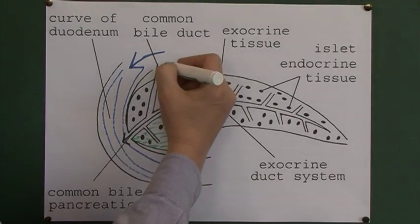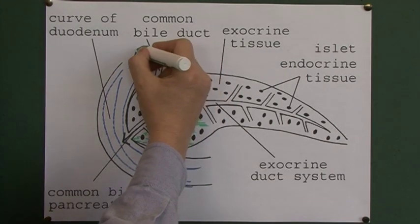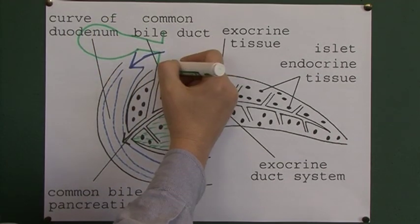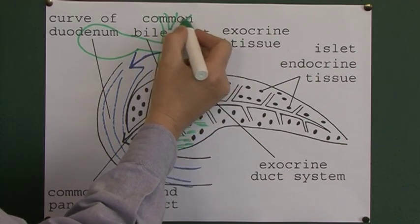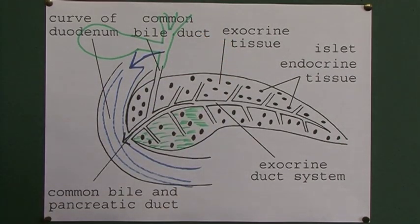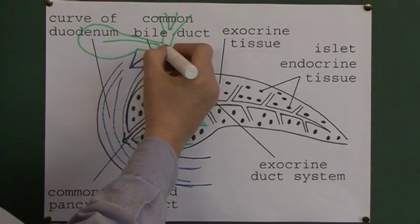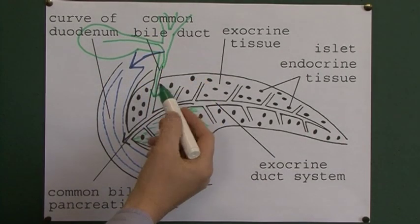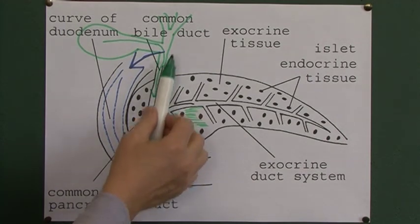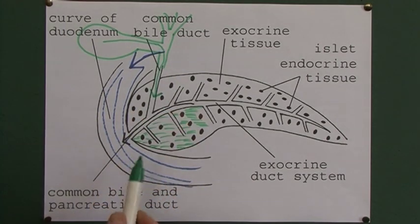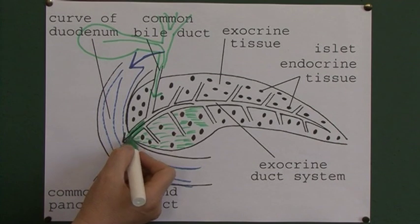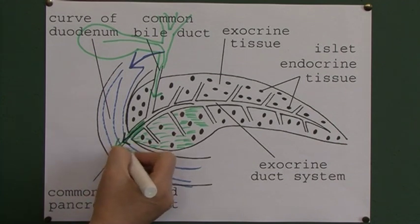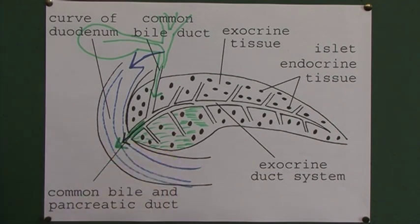Here we see the common bile duct. Up here you've got the gallbladder coming from the common hepatic duct and the right and left hepatic ducts. The bile is going to come down here, down the common bile duct, which goes through the tissue of the pancreas and meets up with the pancreatic duct. This area here is called the ampulla. So pancreatic enzymes and bile will both be released out into the lumen of the duodenum.